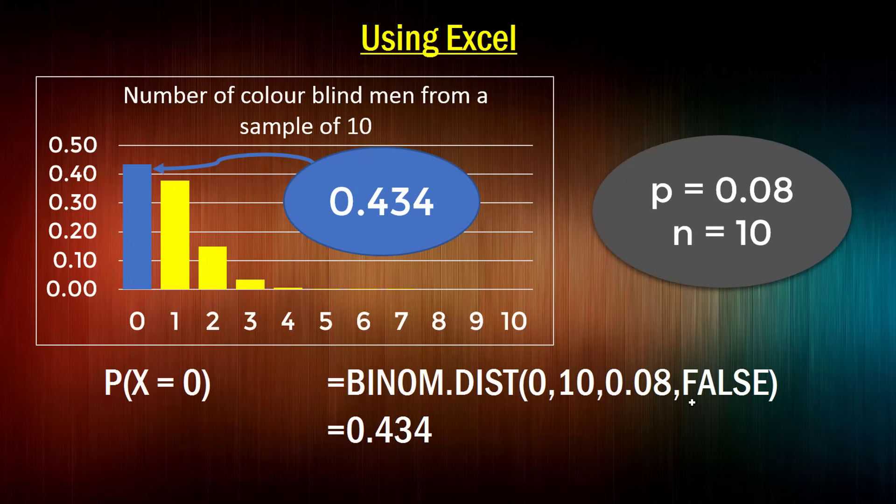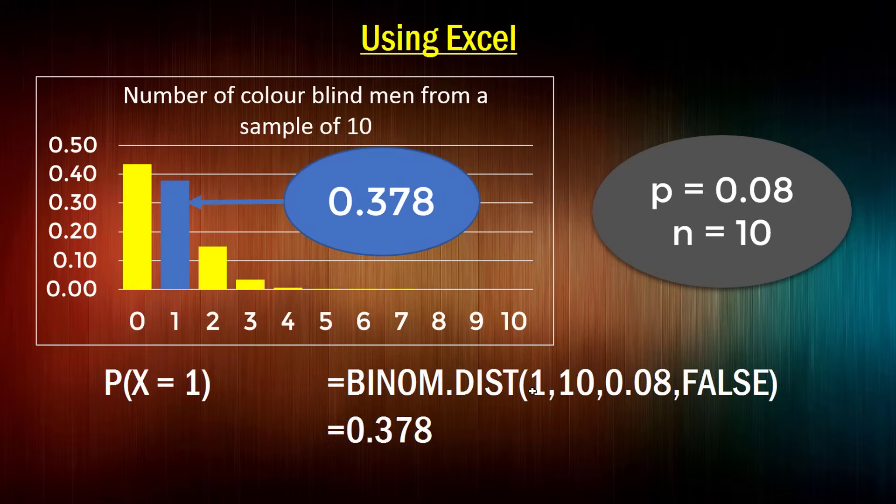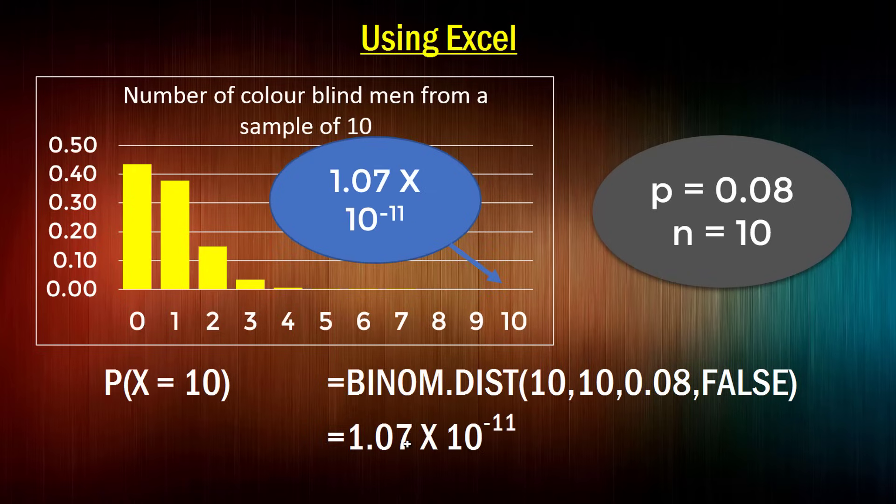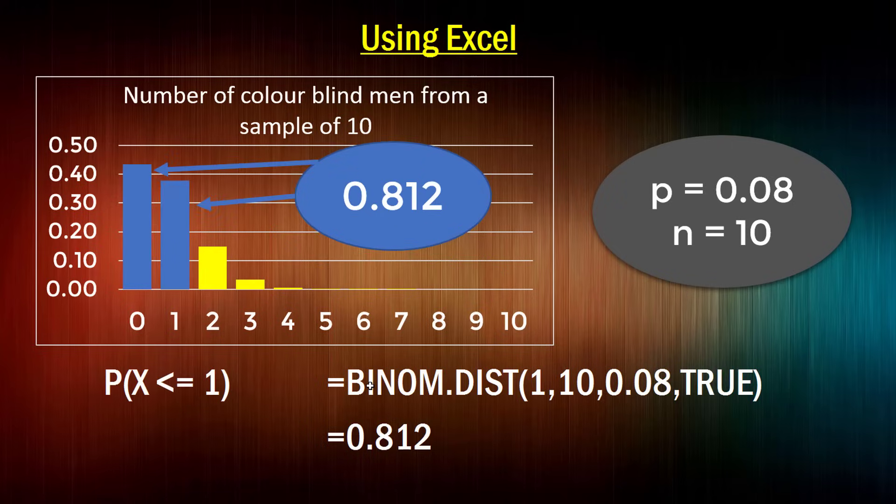And the fourth argument requires us to tell Excel whether we want a cumulative distribution at this point or not. Now I'll explain what a cumulative distribution is in a second. But for the moment, let's just put false, meaning that we're just trying to find the individual probability of that one outcome. So we could use the exact same formula where x equals one to find the probability of having one man out of 10 with colorblindness. And Excel will calculate that for us to be 0.378. And that's this bar here. Here it is for x equals two, it's 0.148. And all I've done is just change this first argument of the binom.dist function to two. Or we can do where x equals 10. And again, I've got 10 in there now, and it'll provide for us that small probability of x being 10. Handy, isn't it?